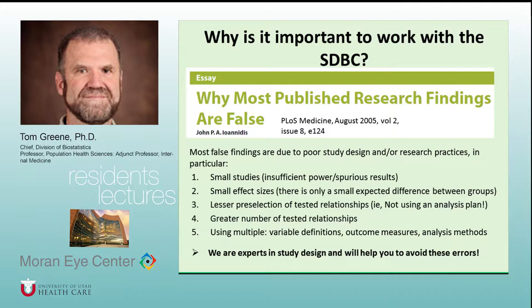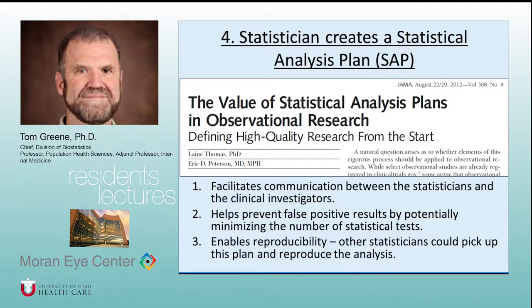This is why it's so important to spell out your analysis plan before collecting data and before running analyses. The more relationships you test, the greater the chance of false positive results. Being precise about the research you're going to do — rather than leaving things vague to be worked out during analysis — is essential. Our Population Health Research Foundation tries to help you through all these steps to avoid these errors.